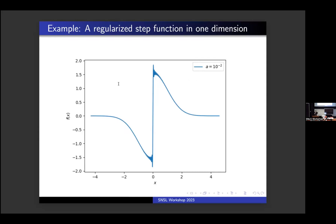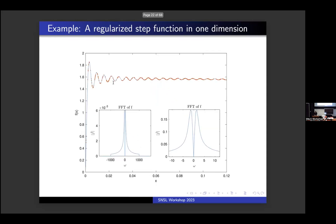If we zoom in, we can see oscillations — this is for the case when a is 10^{-3}. Another feature of this target function is that its Fourier transform has a fat tail from approximately ±1/a. Here a is 10^{-3}, so there's a fat tail between -1000 and +1000 in frequency space. After that, it decays exponentially — essentially zero.